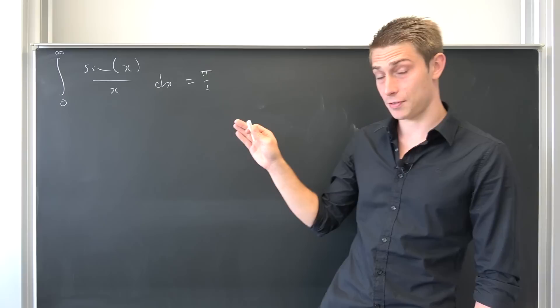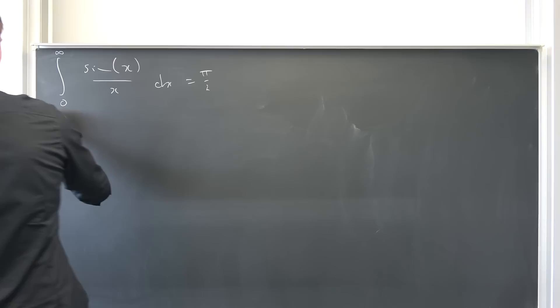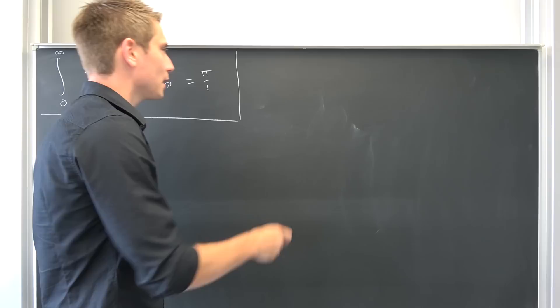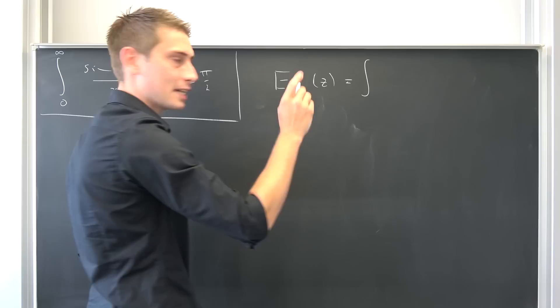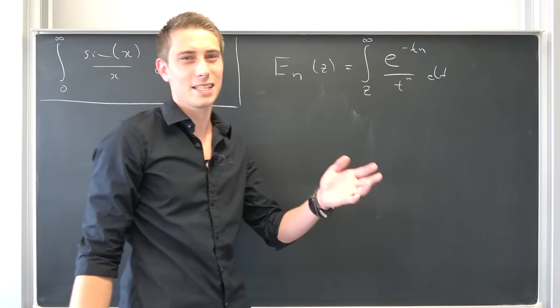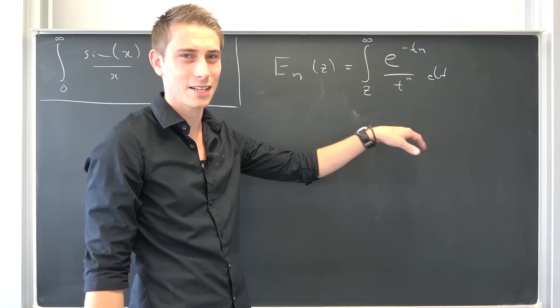The sine integral is nothing but the imaginary part of the exponential integral, which we are going to introduce today. This has been the motivation. We have talked about this before, and the exponential integral in itself already played a role when dealing with integral representations for the Euler-Mascheroni constant. We are going to denote the generalized exponential integral with respect to some complex variable z — it can be complex. It is equal to an integral from z to infinity of e to negative t times n over t to the nth power dt.